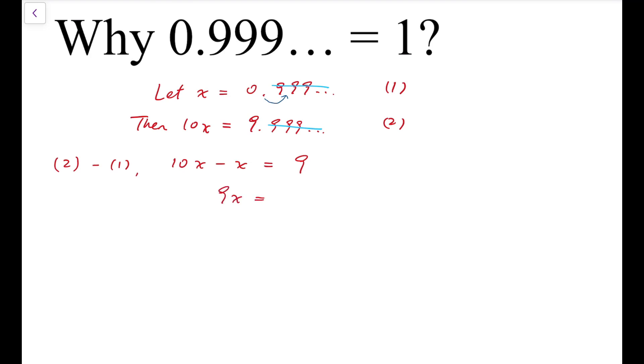So 9x equals 9. And so we have x equals 1. So that means this recurrent decimal is actually equal to 1.